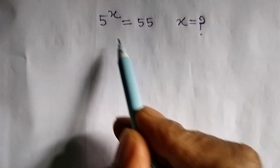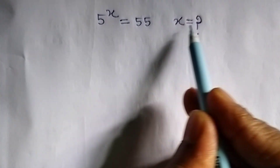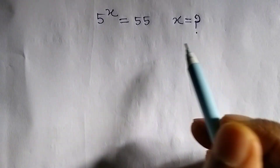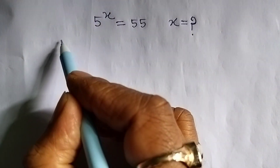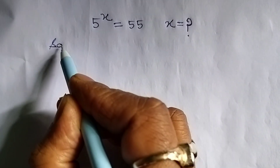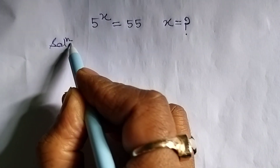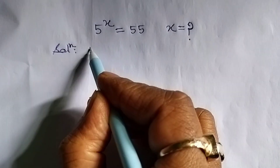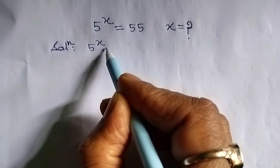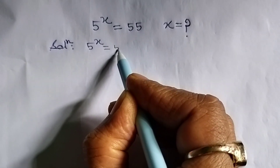Five to the power x equals 55. This is the given question — we will have to find the value of x. Let's see the solution. First of all, we write the given equation: 5^x = 55.